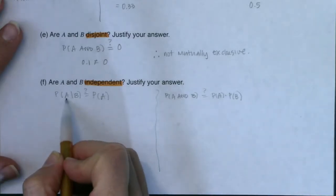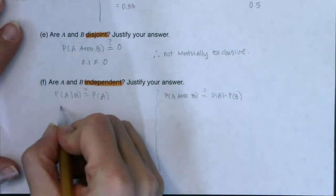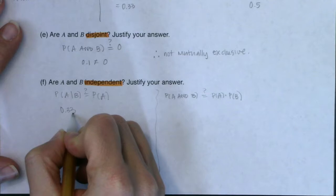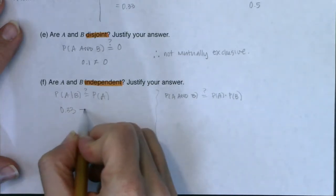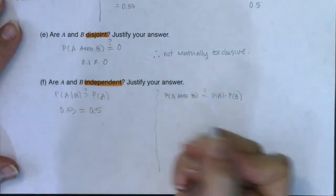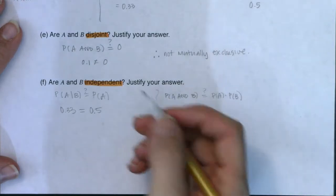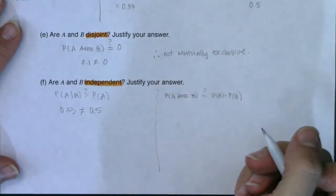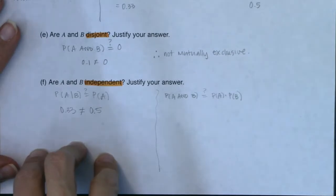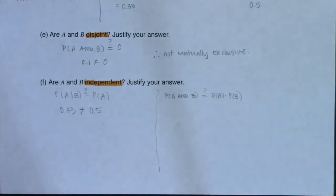So we found this number in part C. We said this is 0.33. All right. And we found the probability of A in part A, we found it as 0.5. These are not equal to each other. Okay.